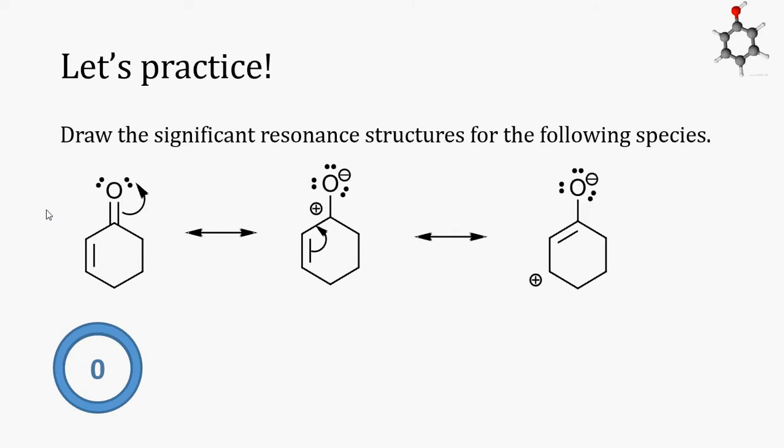Now, the carbon-carbon pi bond is at a different position on the ring and the positive charge has moved counterclockwise two spots on the ring. Again, this is a significant resonance structure because carbon can have an incomplete octet and carbon can have a positive charge as long as oxygen has a negative charge.